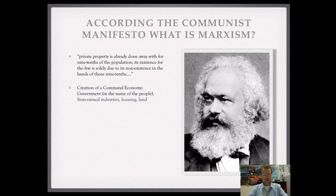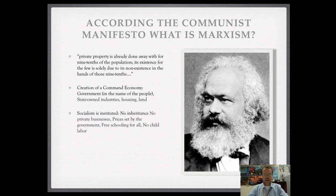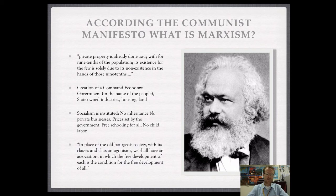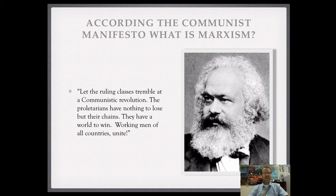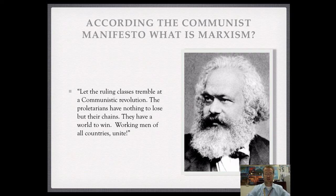Once the political party gained power, they would create a command economy, meaning the government owns everything — housing, land, industries — and this becomes socialism. There's no inheritance, no private business. Prices are set by the government, there's free schooling, and no child labor. In place of bourgeoisie society, there would be an association where the free development of each is the condition for the free development of all. Marx saw that the ruling class would tremble at the communist revolution, and that proletarians of all working countries would unite — across nations — to change the world together.